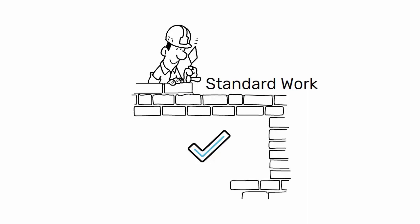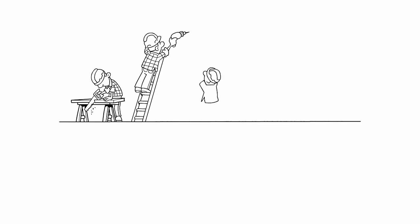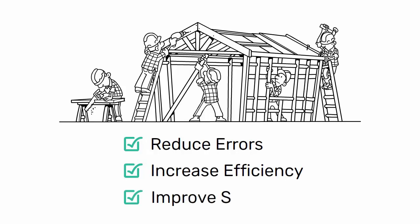Standard work is another important component of lean construction. This involves establishing clear and consistent procedures for performing tasks on site. By having standard work processes in place, construction companies can reduce errors, increase efficiency, and improve safety.